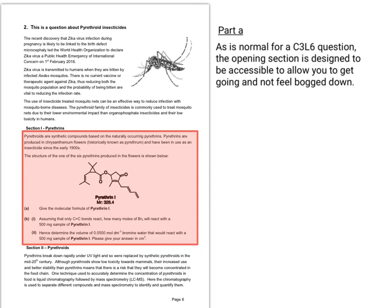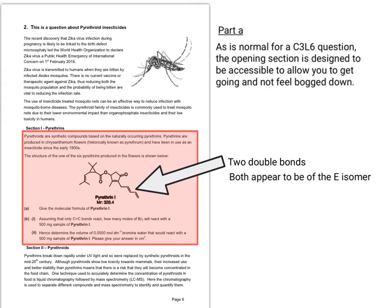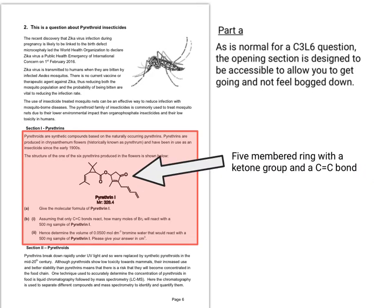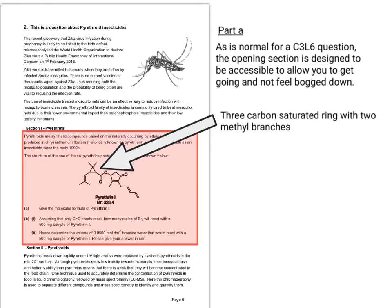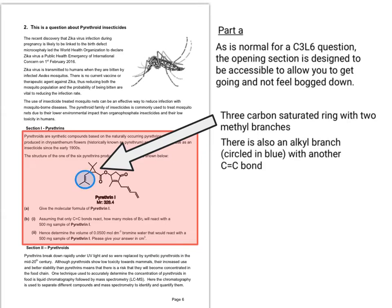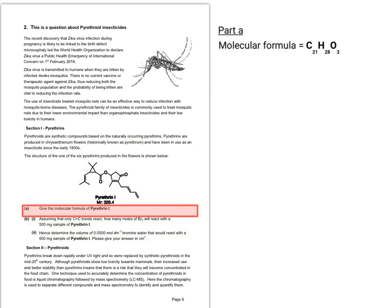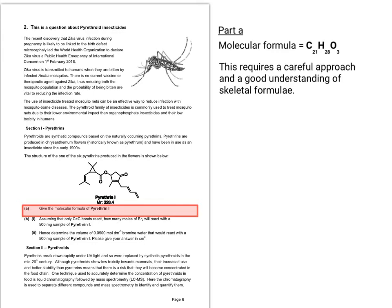Looking at the first couple of sections, it gives you a molecule you haven't seen before, but you'll be able to notice some common functional groups. You can clearly see two double bonds on the end, and paying attention to the skeletal formula, you can see that both appear to be of the E-isomer. Moving along the molecule, there's a five-membered ring with a ketone group and a carbon-carbon double bond. Moving right to left, there's a three-carbon saturated ring with two methyl branches, and coming off this ring there's an alkyl branch with another carbon-carbon double bond. For the molecular formula, you carefully count out the carbons, hydrogens, and oxygens — it requires a careful approach and a good understanding of skeletal formulae.